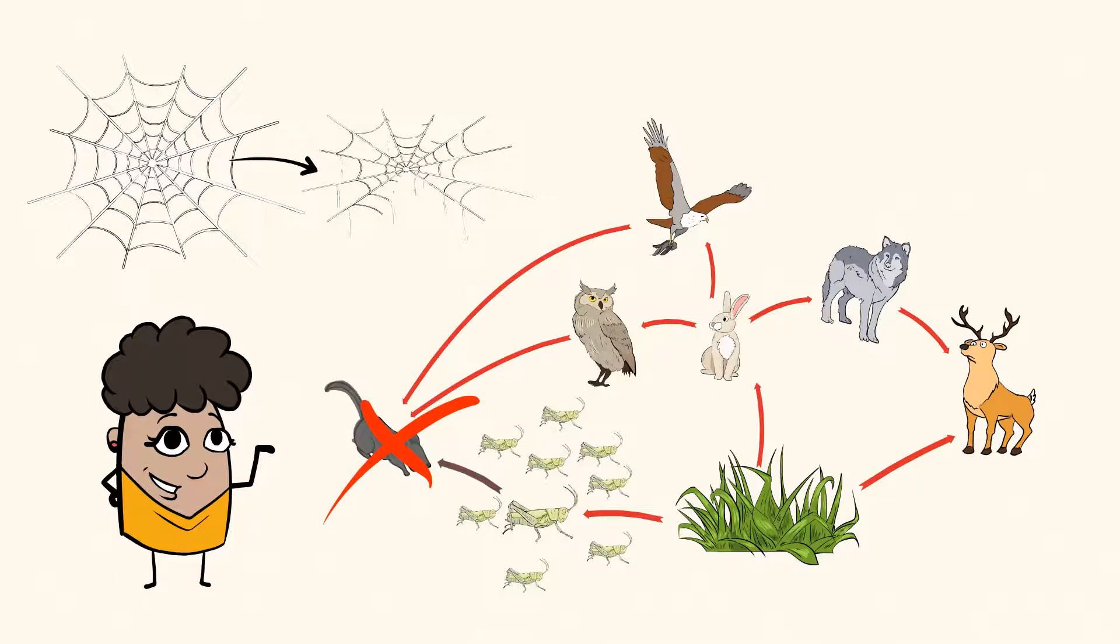there are a lot more grasshoppers because they aren't being eaten by mice. And if there are more grasshoppers, they will eat more grass. Maybe too much.